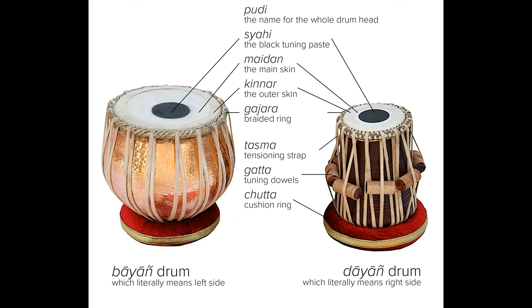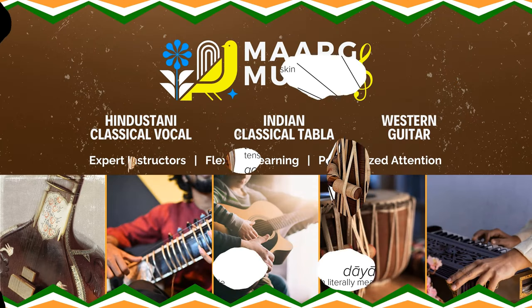Common parts. Buddi: rope or belt — the rope or belt that ties around the tension straps to secure them and help maintain tuning. Ring: support ring on which the tabla is placed to keep it stable during playing. Each part of the tabla contributes to the unique sound and playability of the instrument, making it a crucial component in Indian classical music.